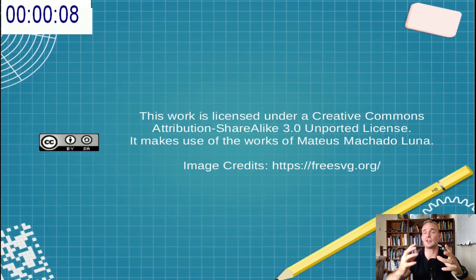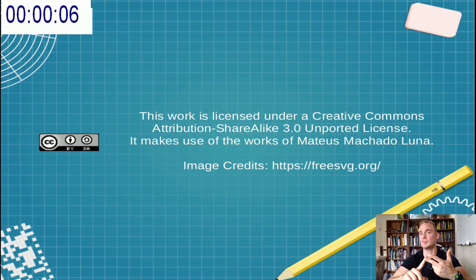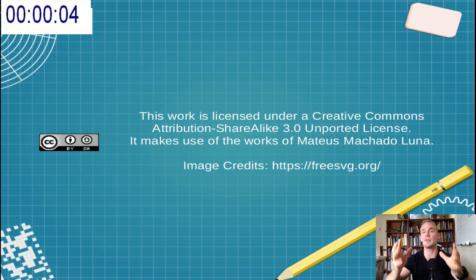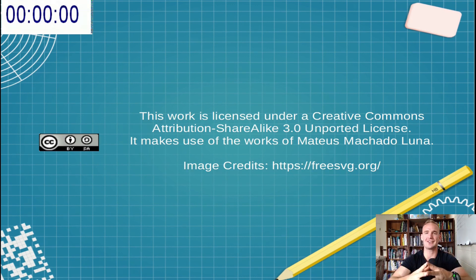So in summary, a Satoshi is the smallest unit of Bitcoin — one one-hundred-millionth of a Bitcoin. I hope you all found this video useful. Thanks for watching and I'll see you next time.